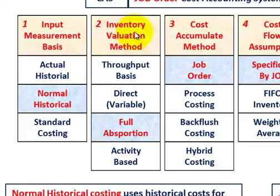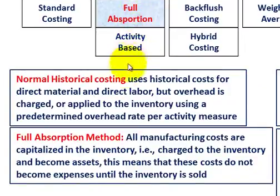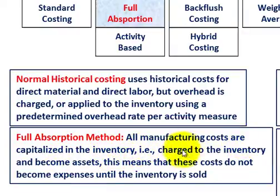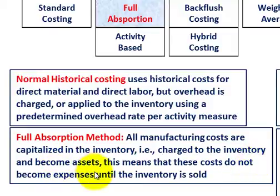Moving to our inventory valuation method, in this case we're going to use full absorption valuation for inventory. With the full absorption method, all manufacturing costs are capitalized in the inventory and charged to the inventory, so it becomes an asset. Your inventory account becomes an asset, which means these costs do not become expenses until the inventory is sold.